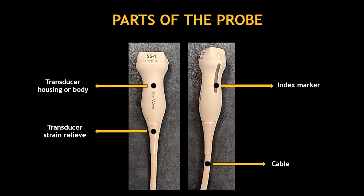It's very important to recognize the parts of the probe. On the left picture we can see the housing or body of the transducer and the strain relief. On the right picture we can see the index marker and the cable.